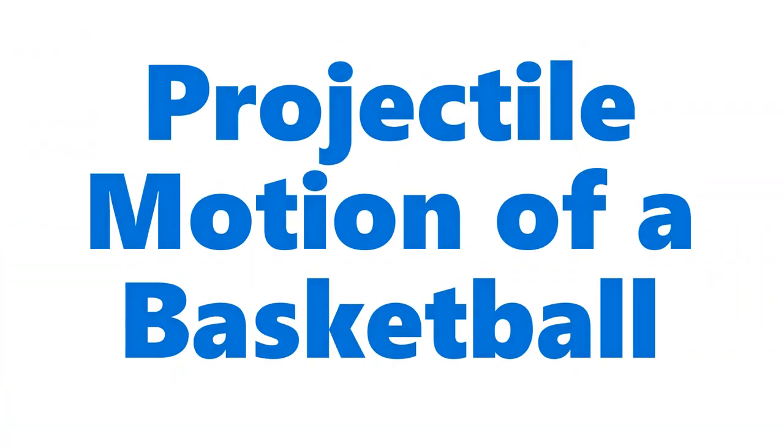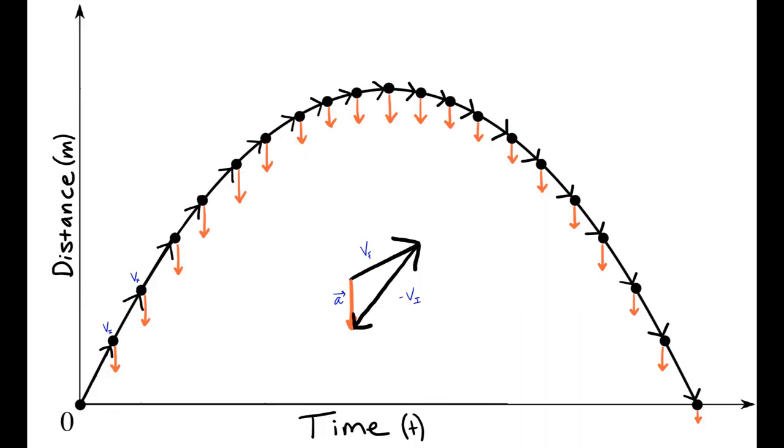Projectile motion is described as an extension to two dimensions of the free fall motion. This is best described using vectors. This form of motion creates what is called a parabolic curve, where the object begins at the bottom and creates a round curvature vertically until it hits the ground.